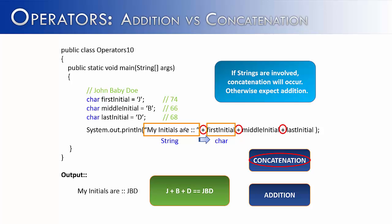If we have the string, my initials are, and the character, or primitive data type, first initial, the plus sign is going to look to its left and look to its right and say, am I going to add or concatenate? If it finds a string, it's going to concatenate. And so this would become, my initials are J. Then the next plus sign would look to its left and look to its right and determine, am I going to concatenate or am I going to add? Well I don't have a string and a primitive here. I have two primitives being character and character. So you would think that it would add. But this is not the case. It doesn't look at the left and see just first initial. What it sees is, my initials are, space, J.